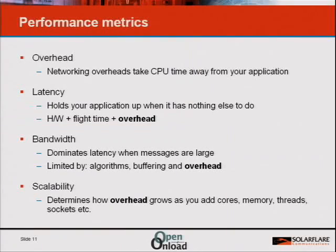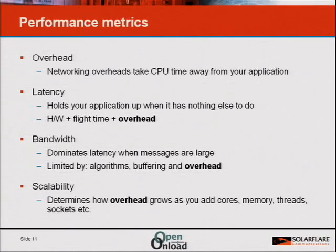So the first thing when creating high-performance networking is what do you concentrate on? How do you improve performance? The answer is overhead — CPU overhead. If you're spending time on the CPU doing stuff in the network, you're not spending that time in your real application. Some applications can't make progress because they're waiting for something to happen, in which case the latency of the network has an effect. The time that message takes to get to you is determined by the latency.